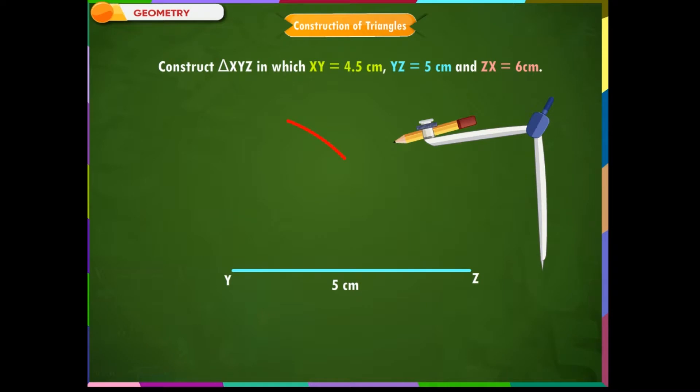Step 3: From Z, point X is at a distance of 6 cm. So, with Z as center, draw an arc of radius 6 cm. Step 4.